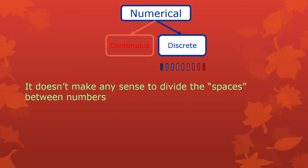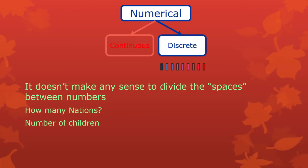A discrete scale is where it does not make any sense to divide the spaces between the numbers. Anytime you're counting things that cannot be divided themselves because of the way they're defined, that's a discrete scale. For instance, you're asking how many nations are in the UN — you can't have a fraction of a nation, either it is or it isn't. The number of children that people have is a great example: even if you have a brother who's just not quite right, he's still a whole individual. You don't give him a 0.5.